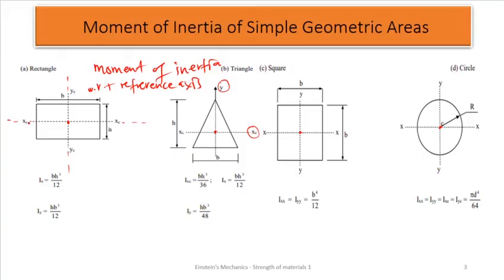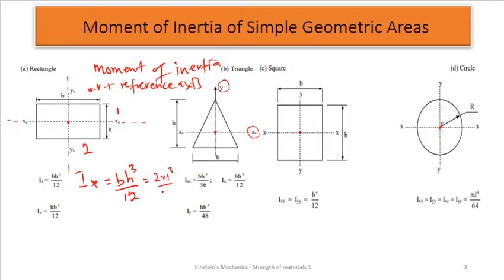To find the moment of inertia for a rectangle about the x-axis, which is at the centroid of the figure, it is Ix = bh³/12, where b is the base and h is the height. For example, if the base is 2 and the height is 1, we get 2 × 1³ / 12. The result is the moment of inertia of the plane figure about the x-axis, expressed in units of mm⁴, cm⁴, or m⁴.